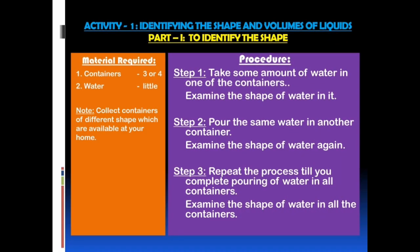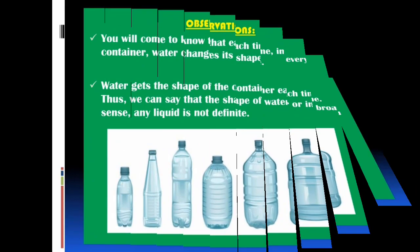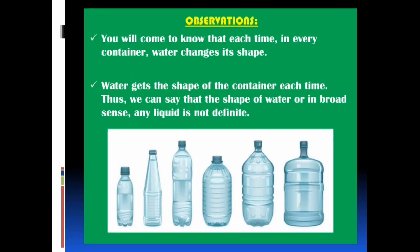Now, Activity 1: identifying the shape and volumes of liquids. Part 1 — to identify the shape. Material required: 3 or 4 containers, water. Step 1: take some amount of water in one of the containers and examine the shape of water in it. Step 2: pour the same water into another container and examine the shape of water again. Step 3: repeat the process until you complete pouring water into all containers and examine the shape in each.